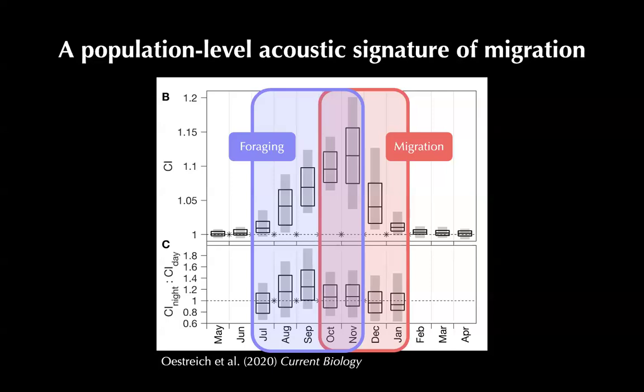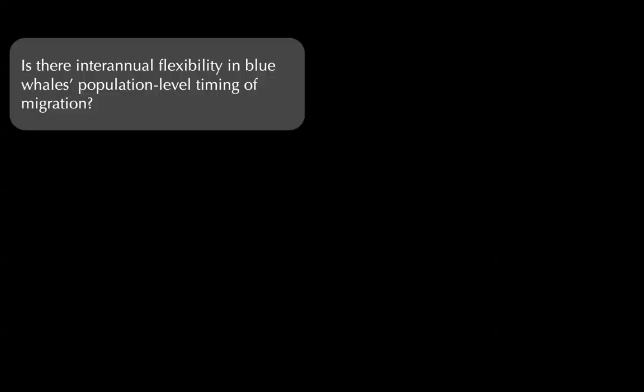The period where most song is during the nighttime corresponds to foraging, and as song spreads more evenly over day and night, we're hearing the southward breeding migration. I like to think of this as a population-level acoustic signature of migration — an exciting finding in itself, but also a really valuable tool to ask follow-up questions about when and why and how these animals are migrating at the population level.